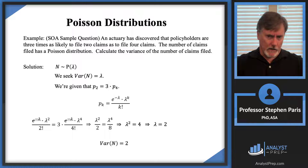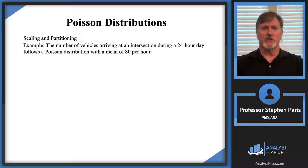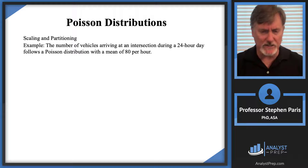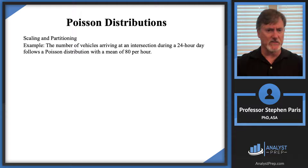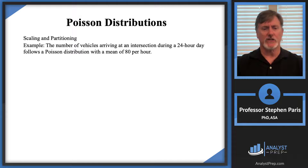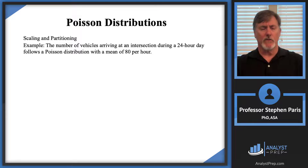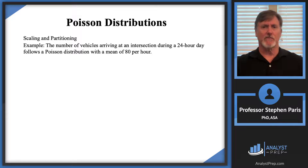The Poisson distribution has some very nice properties called scaling and partitioning. When we talk about scaling, we're talking about scaling the exposure unit. In this example, vehicles arriving at an intersection during a 24-hour day follow a Poisson distribution with a mean of 80 per hour. The Poisson is a counting — or frequency — distribution. Whenever you're counting per something, that 'something' is called the exposure unit; in this case, the exposure unit is one hour.